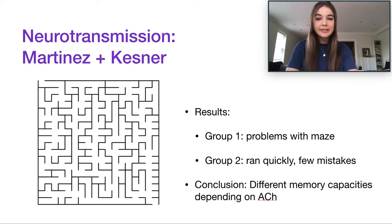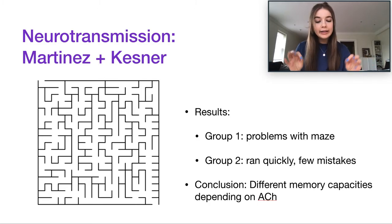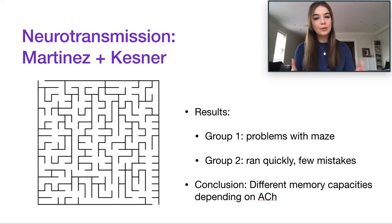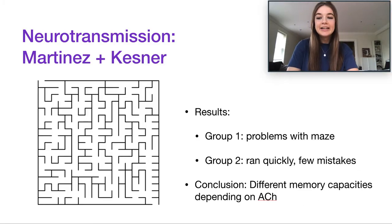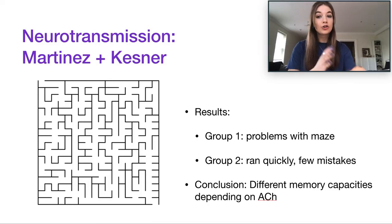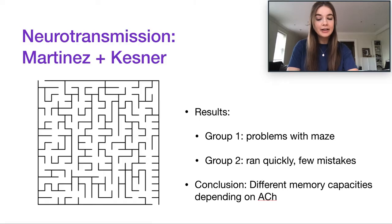That said, because it's a controlled lab experiment, all other variables are controlled, which allows us to isolate the variables of interest and make stronger conclusions. So that's acetylcholine — a clear example of neurotransmission and a neurotransmitter's effect on behavior, specifically memory capacity.